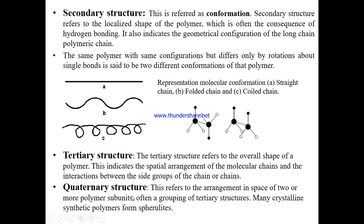The quaternary structure refers to the arrangement in space of two or more polymer subunits — often a grouping of tertiary structures. Many crystalline synthetic polymers form spherulites. A spherulite is a crystallite — the smallest form of a crystal — where a number of molecules are arranged together. When two or more polymer subunits are arranged together in space, this constitutes the quaternary structure.